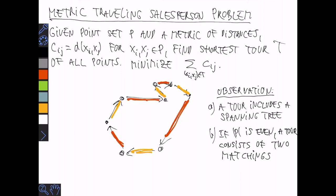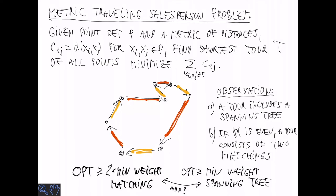So all the red edges here make up a matching and all the yellow edges make up a matching. So this means an optimal tour has weight at least two times the weight of a minimum weight matching. And also an optimal tour has weight at least the minimum weight of a spanning tree.